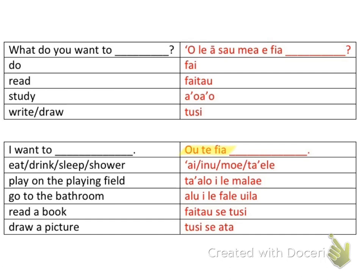You can also say: I want to play on the playing field — 'ta'alo i le malae'; go to the bathroom — 'alu i le fale'iti'; I want to read a book — 'faitau se tusi'; and I want to draw a picture — 'tusi se ata.'